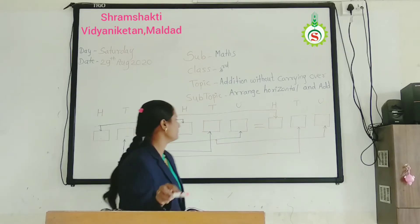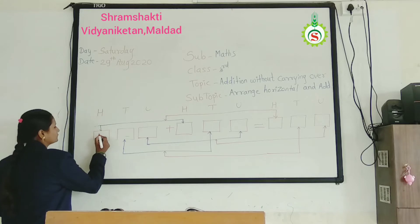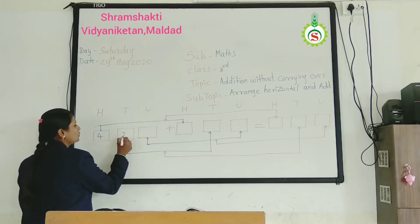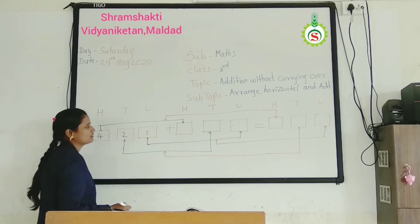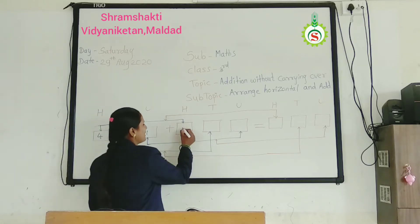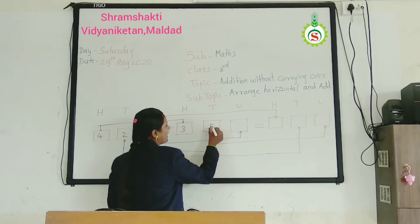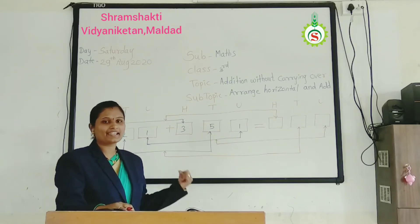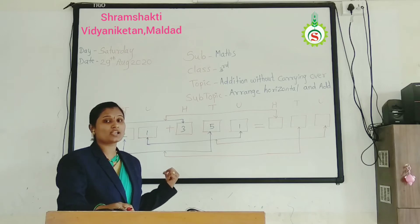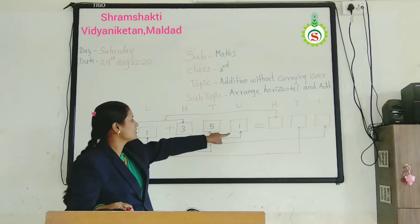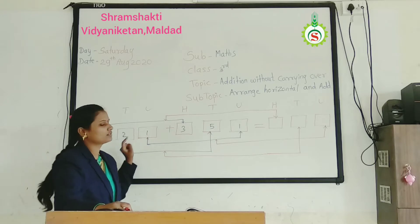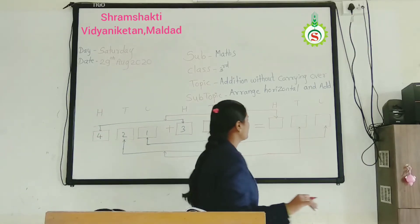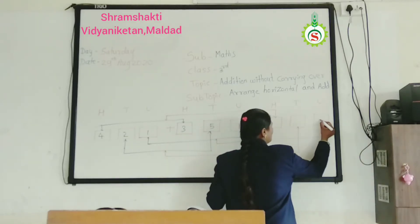See the first sum: 400, 2 tens, 1 unit. Add 300, 5 tens, 1 unit. First of all, in addition, you see which column? Unit column. See here: 1 add 1. 1 add 1 is 2. Write down at which place? Unit place.